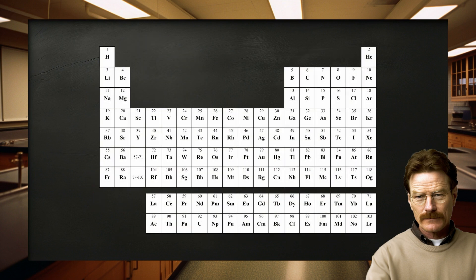The periodic table is very useful for remembering ionic charges, especially those of elements on the left and right sides. The charges of ions relate in a simple way to their positions in the table. For example, elements in group 1 can lose one electron, elements in group 2 can lose 2 electrons, and elements in group 13 can lose 3 electrons.